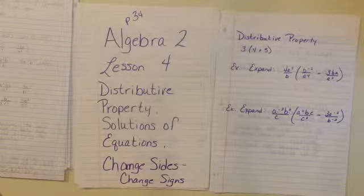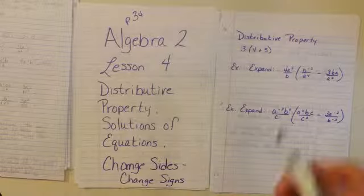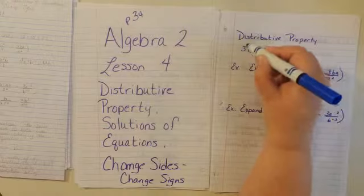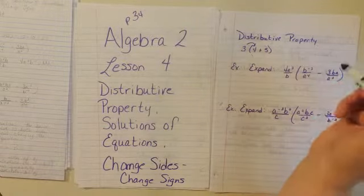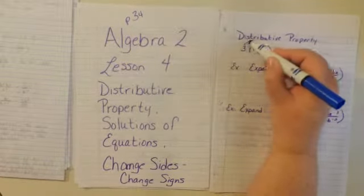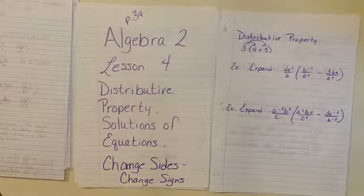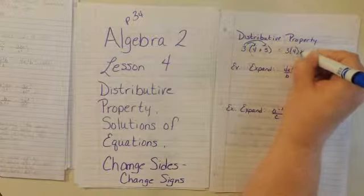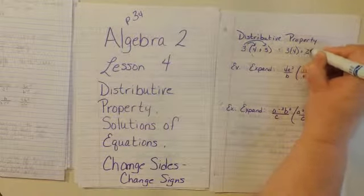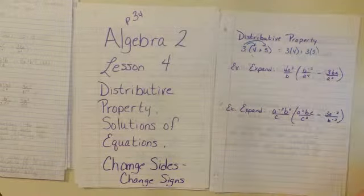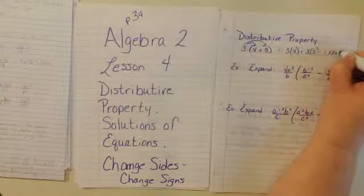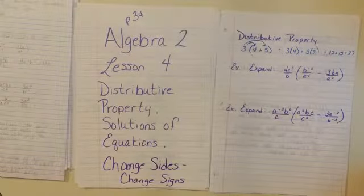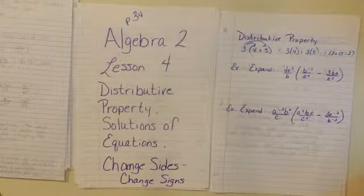The distributive property. When we are multiplying a number times a quantity, we multiply this through. So first we multiply the 3 times 4, and then we multiply the 3 times 5. So this is going to equal 3 times 4 plus 3 times 5, which is 12 plus 15, which equals 27. Okay, so let's try some examples of that.